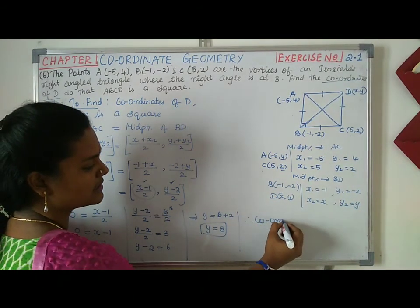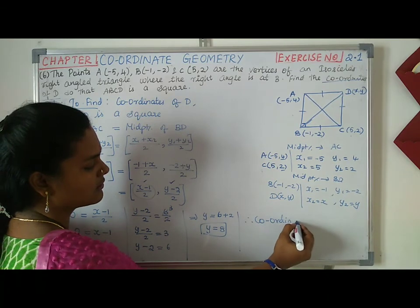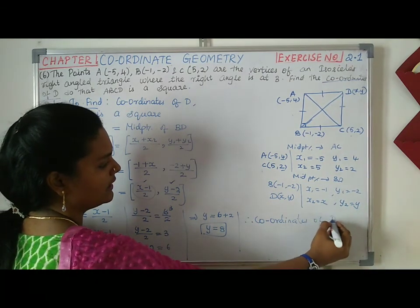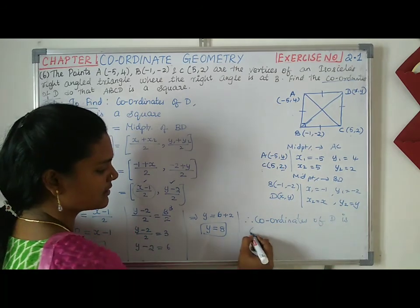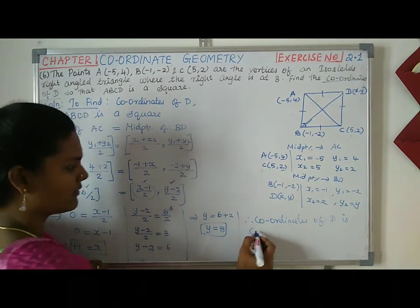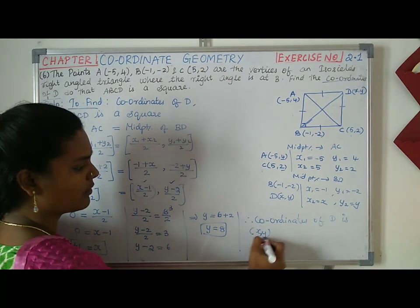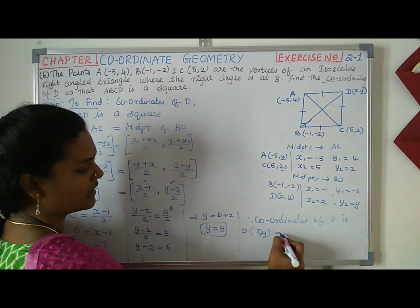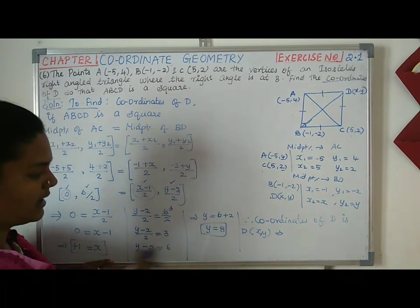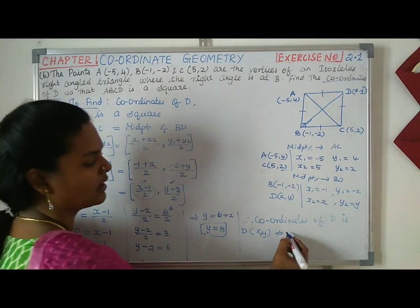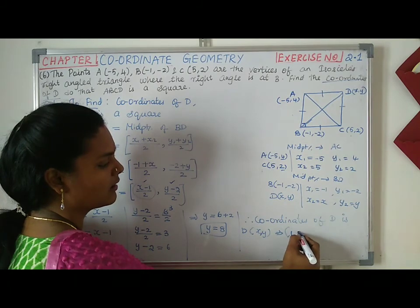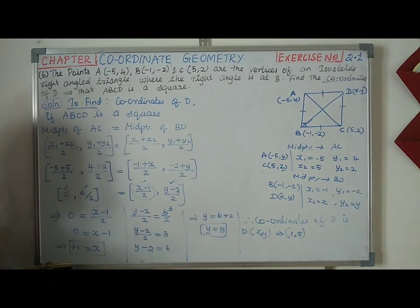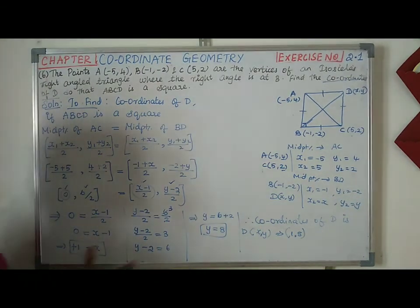Therefore, coordinates of B: x value is 1, y value is 8. So B is (1, 8). That's the problem.